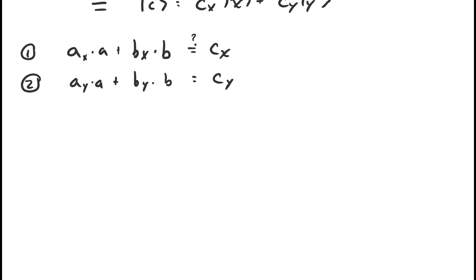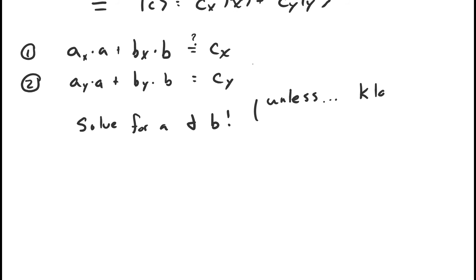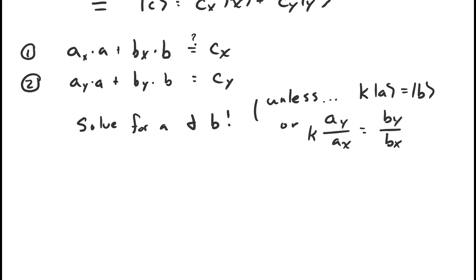If you've studied systems of equations before, you know this problem is solvable — we can solve the system for numbers α and β that satisfy these equations, which solves the problem of expressing vector c as a linear combination of vectors a and b, meaning these three vectors are not linearly independent. The only caveat is if the numbers a_x, b_x, a_y, b_y have some condition where their ratios are equal — that means the system is unsolvable. But if that happens, it also means that vectors a and b are already linearly dependent; one is just a scalar multiple of the other. So we don't actually have to worry about that case.